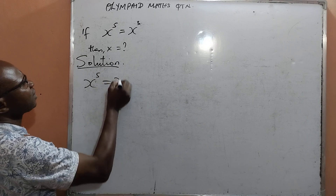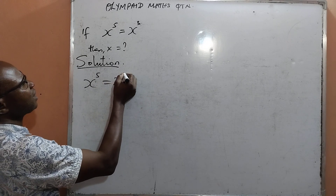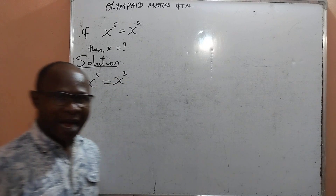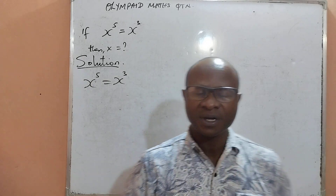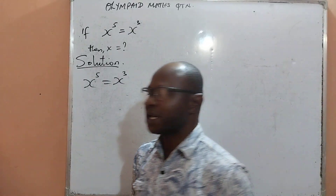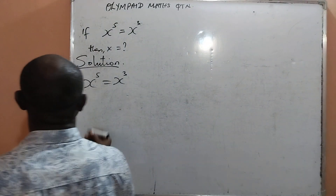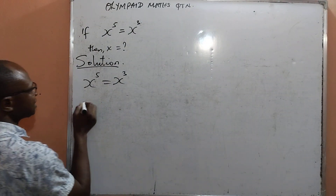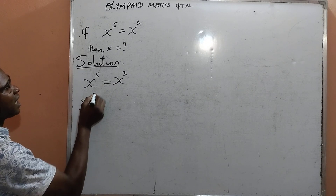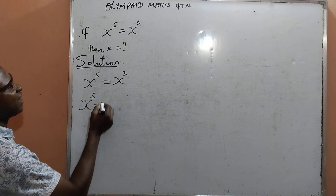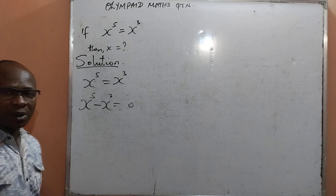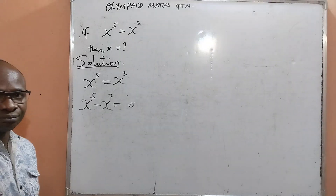The question is x raised to power 5 equal to x raised to power 3. I will move x raised to power 3 from the right hand side to the left hand side, so that it will look like this: x raised to power 5 minus x raised to power 3 equal to 0.